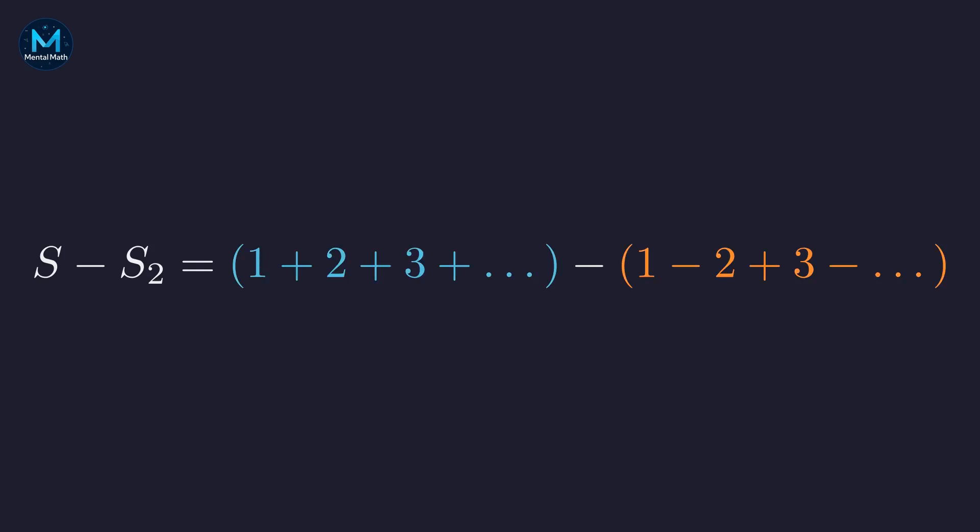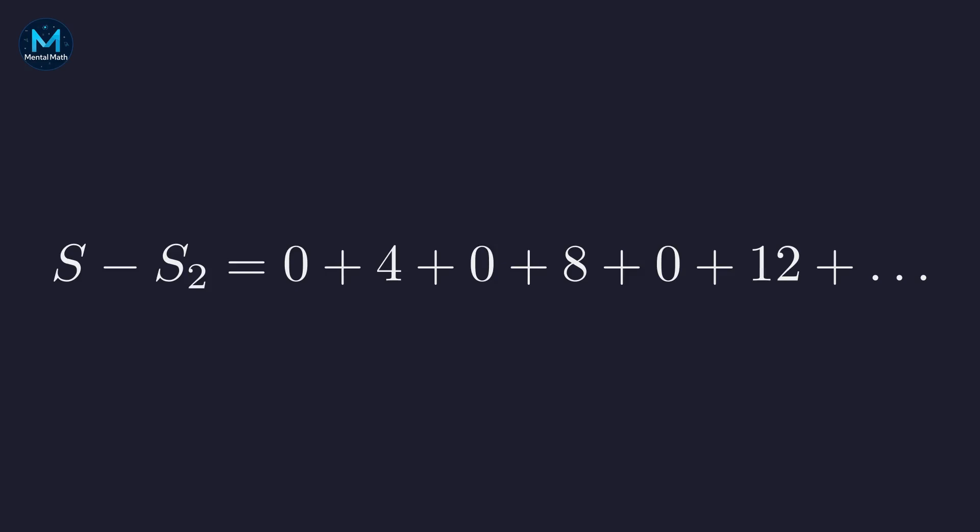Observe carefully what happens with the signs during this subtraction. 1 minus 1 is 0. 2 minus negative 2 is 4. 3 minus 3 is 0. 4 minus negative 4 is 8. The odd numbered terms cancel out. Let's simplify this resulting series. We are left with the sum of 4 plus 8 plus 12 and so on, the multiples of 4.